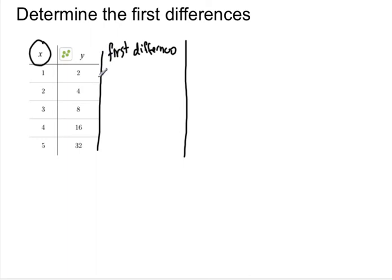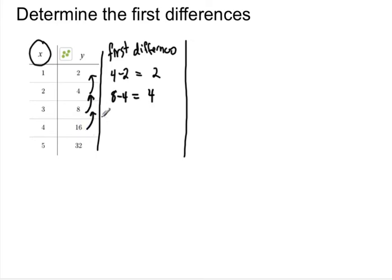What we do is take the difference between each successive y-value. The first difference is we take 4 and subtract the y-value right before it, 2, and we get 2. The second first difference is taking the one below that and subtracting the one above it, so 8 subtract 4, we get 4. And this first difference is 16 subtract 8, and this first difference is 32 subtract 16. So these numbers 2, 4, 8, and 16 make up the first difference column.